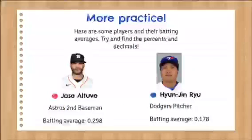Here's some more practice. Here's some of my favorite players and their batting averages. And we're going to try and find the percents and fractions of their averages. So first we have Jose Altuve. He's the Astros' second baseman, and his batting average as of last season is 0.298. And we have Hyunjin Ryu. He's a Dodgers pitcher, and his batting average is 0.178.